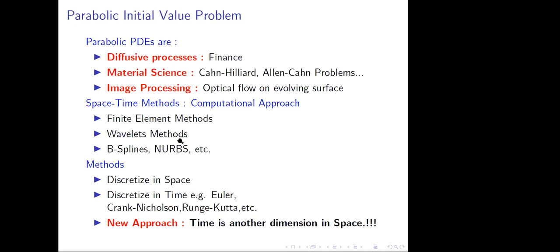When it comes to Spacetime methods, there are many approaches in existing literature: finite element methods, well known from Panek, Schwab, and co-authors; wavelet methods used by Christoph Schwab or Andreev; and B-splines and NURBS. Usually, the classical methods discretize first in space and then in time using Euler schemes, Crank-Nicolson, or other time-stepping methods.